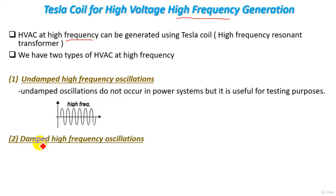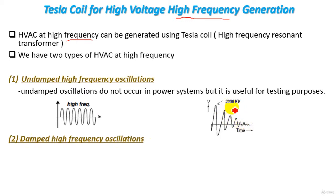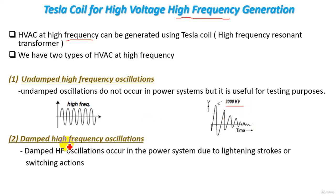The second type is damped high frequency oscillations. The waveform of this type shows damping in the oscillations, with high frequency and a peak voltage that may reach 2000 kilovolts. Damped high frequency oscillations occur in power systems due to lightning strokes or switching actions.